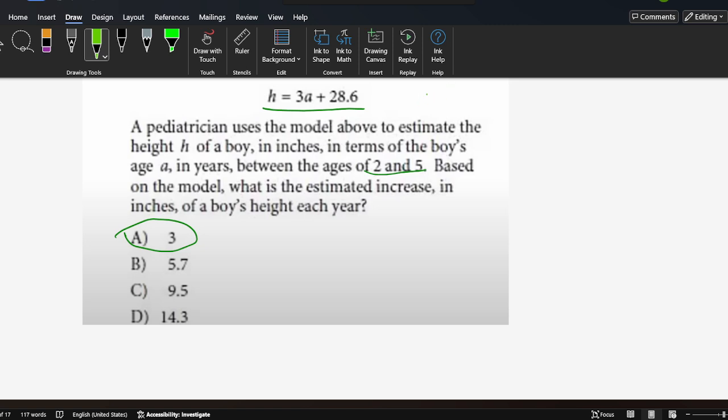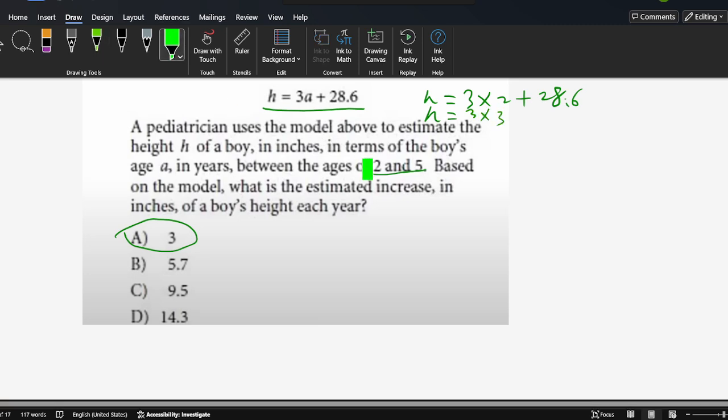h equals 3 times 2 plus 28.6. And then we substitute the other h: h equals 3 times 3, because h is from 2 to 5. We substitute 3 plus 28.6. Then we call this h1, this h2.